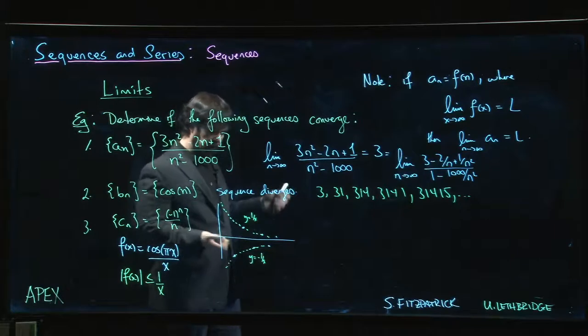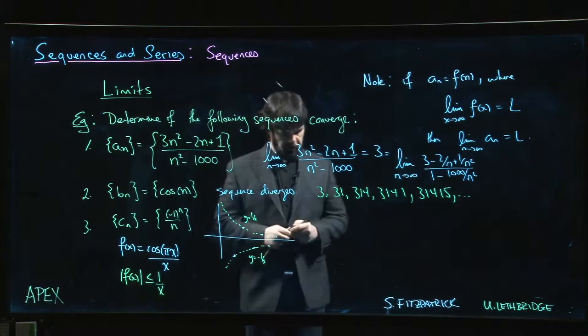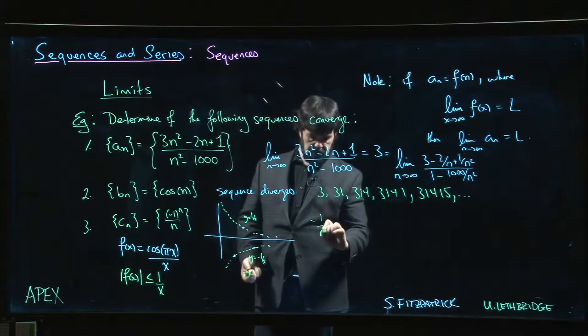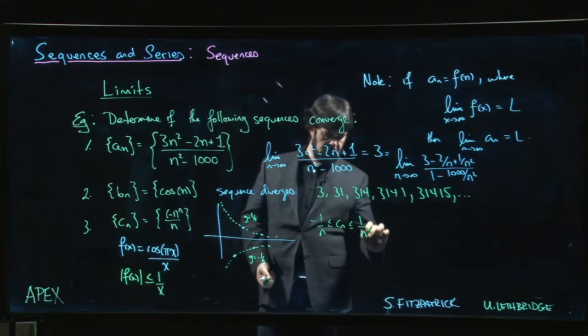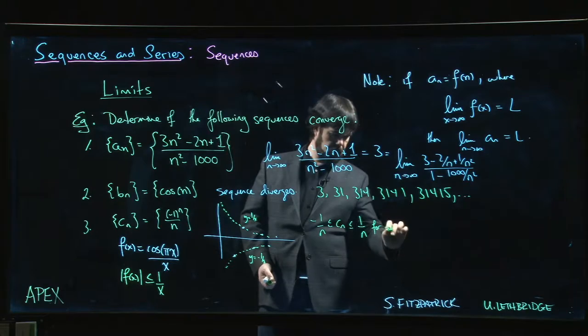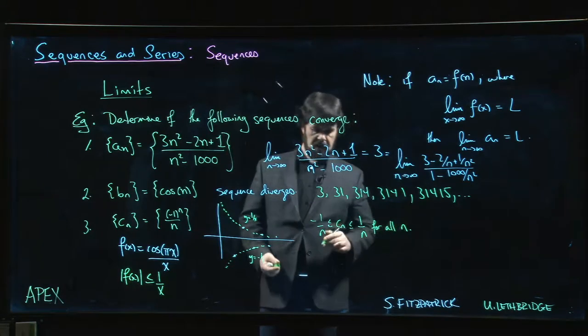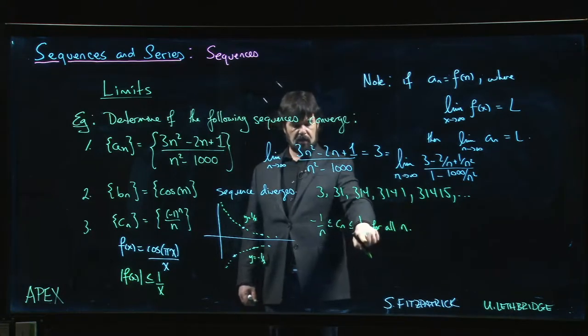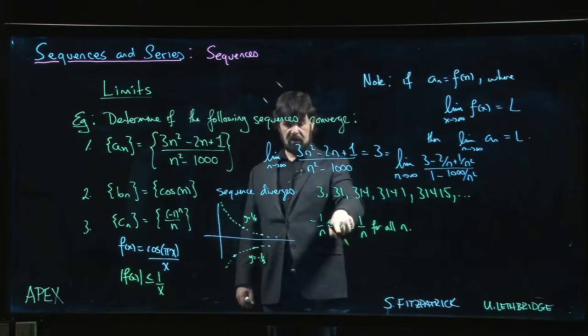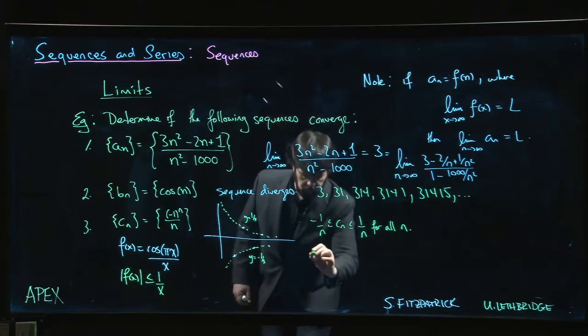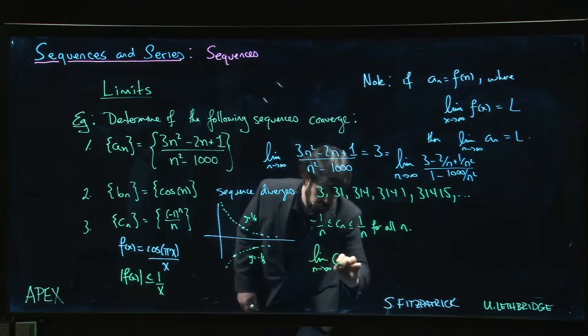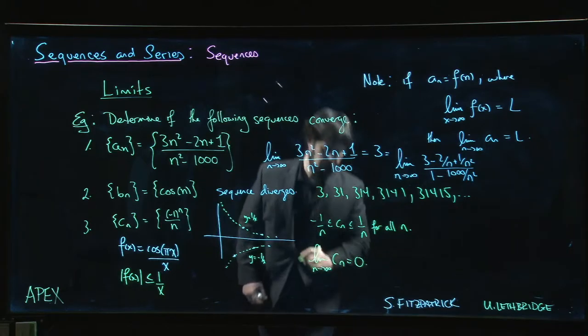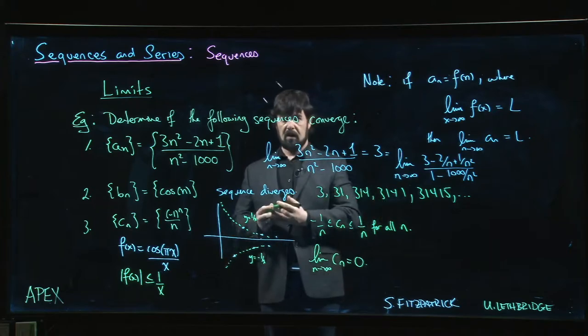Actually, that squeeze theorem argument you can use for sequences as well. We can just say, it's true that -1/n ≤ c_n ≤ 1/n for all n. We know that goes to 0, we know that goes to 0. Squeeze theorem says this has to go to 0 as well. So we know the limit as n goes to infinity of c_n is 0, so it converges to 0.